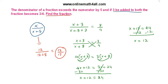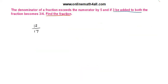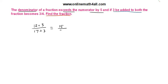Now we can verify our answer with the given information. The fraction we got is 12/17. Checking the first condition: the denominator must exceed the numerator by 5. That is true — the numerator is 12 and the denominator is 17, which exceeds 12 by 5. Now applying the second condition: add 3 to both numerator and denominator — that gives 15/20.